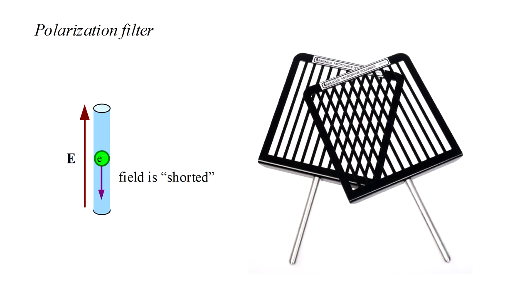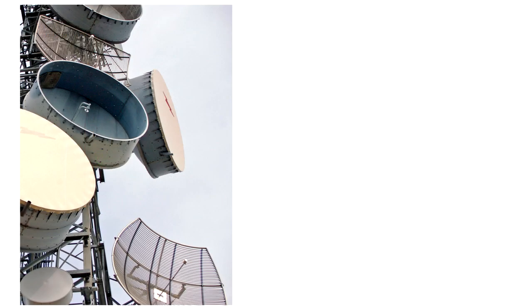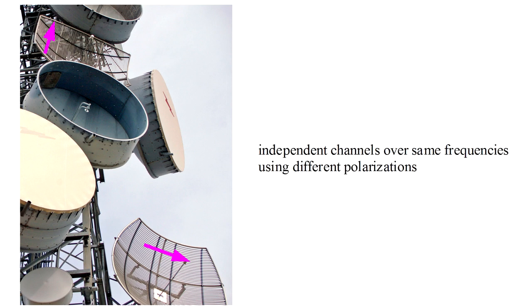Therefore a grid of wires will, ideally, pass the electric field component perpendicular to the wires and reflect the component parallel. At microwave frequencies this is precisely how a polarization filter can be constructed. This picture shows two microwave antennas based on this principle. One has vertically oriented bars and will reflect and receive only vertically polarized microwaves. The other has horizontally oriented bars and will reflect and receive only horizontally polarized microwaves. This allows two independent channels to operate over the same range of frequencies.